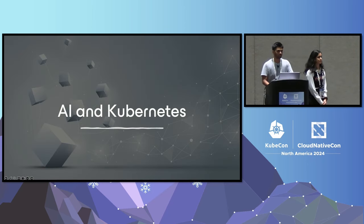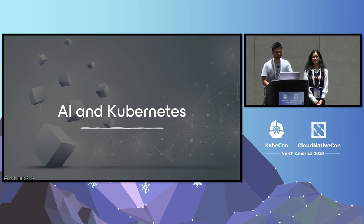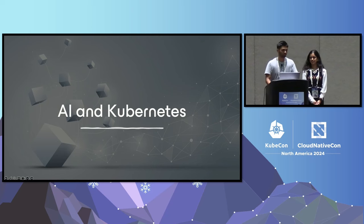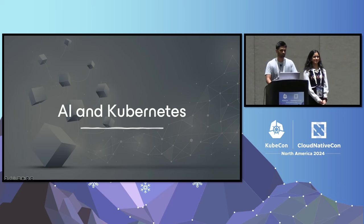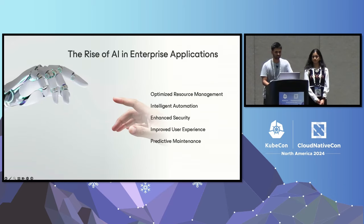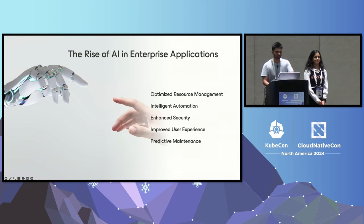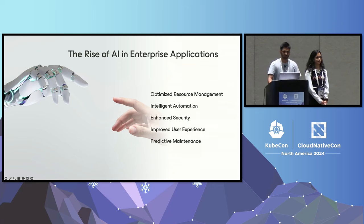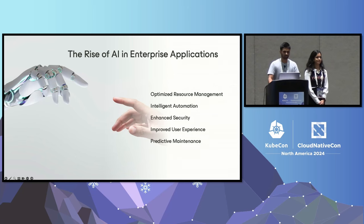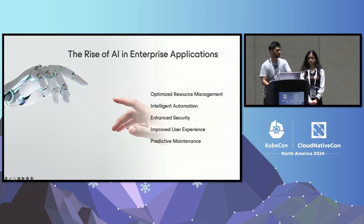How many of you use AI in your applications? This talk is going to be useful for all of you who raised your hands. There are a lot of reasons you might be using AI in your applications, but here are some reasons why we think AI is making a big impact. By predicting and scaling resources dynamically, AI can enhance resource management, keeping performance and cost optimized. Then there is security — AI boosts security by detecting anomalies and blocking threats in real time.